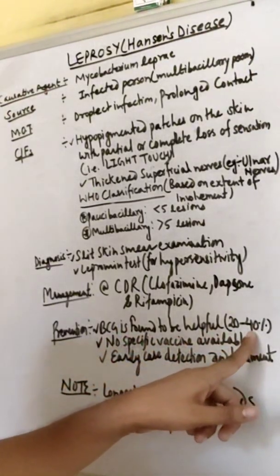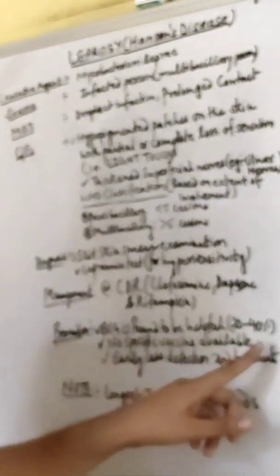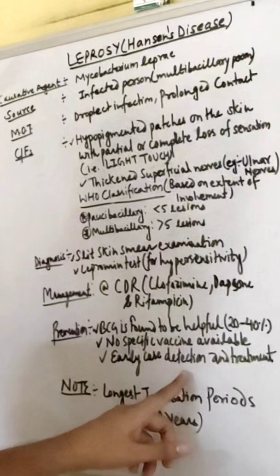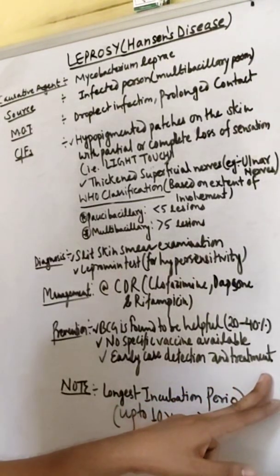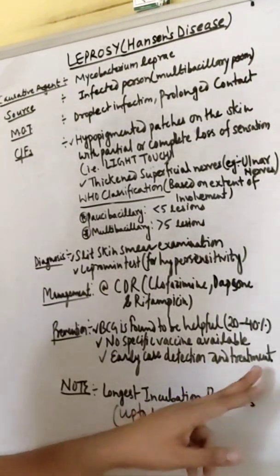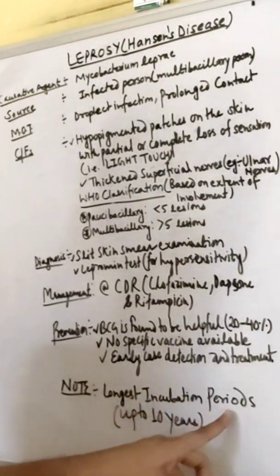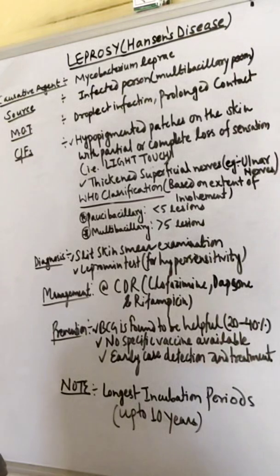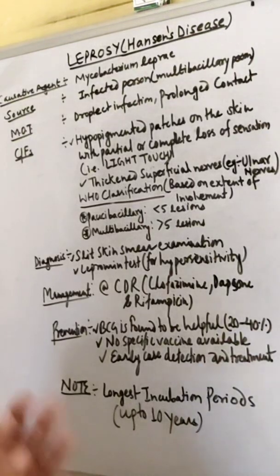Early case detection and treatment will be beneficial in the case of leprosy as well as tuberculosis. Note: the longest incubation period of leprosy is three to five years or sometimes ten years. Thank you so much.